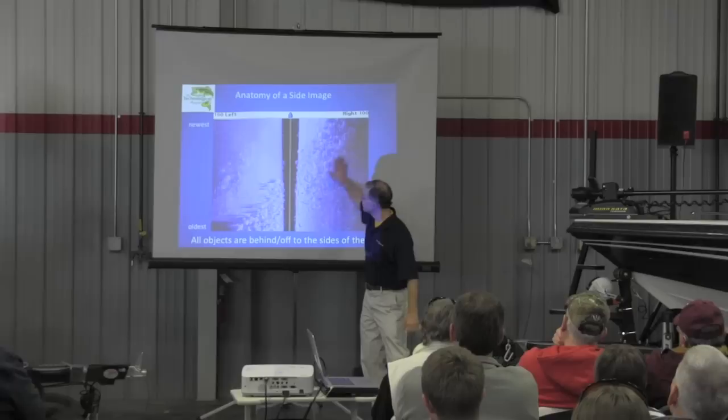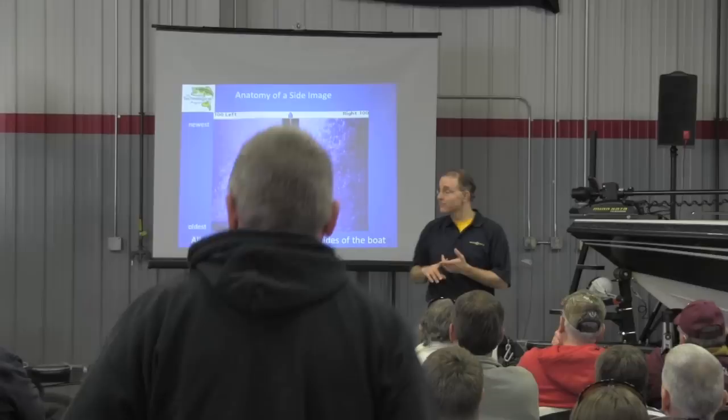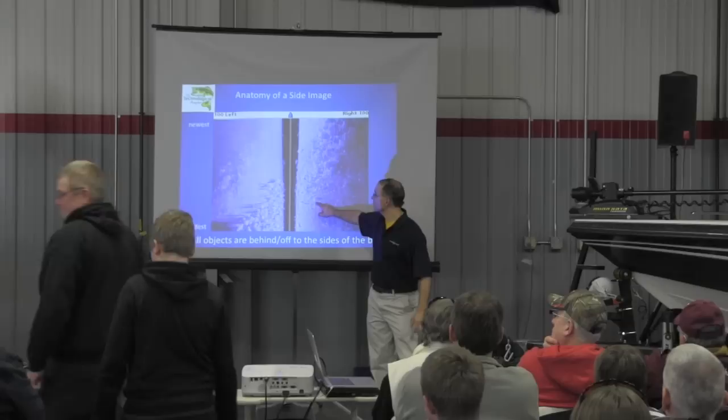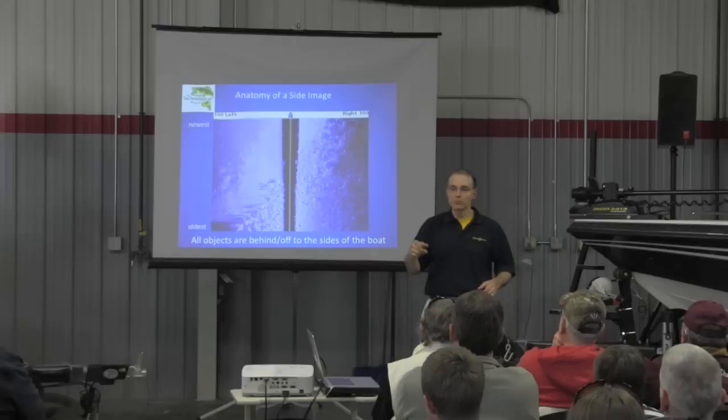I'll tell you that this particular image is a weed bed — a weed bed up on the north end of Mallacques. I can identify weeds pretty easily. Particularly coontail weeds like this look like little cotton balls or balls of cauliflower. That's one of the really good ways to identify weeds. We'll look at some other weed images in just a little while.